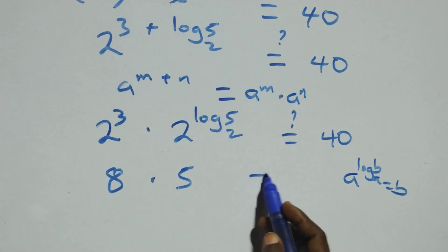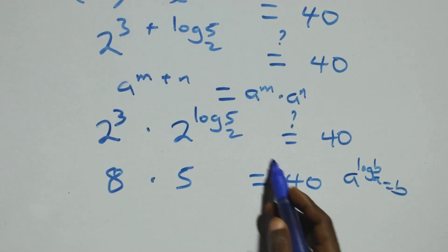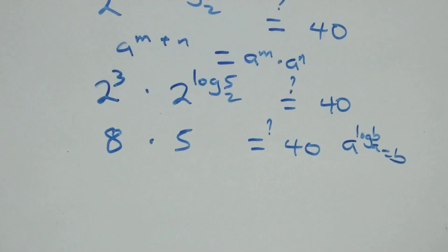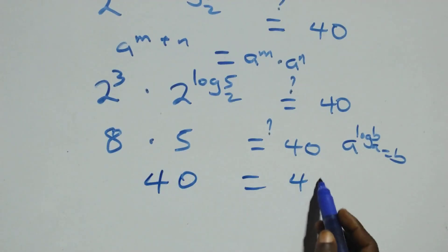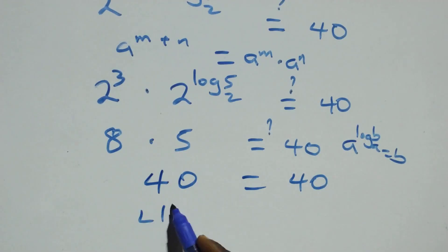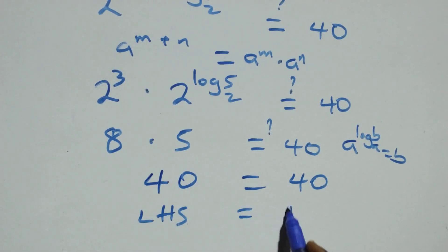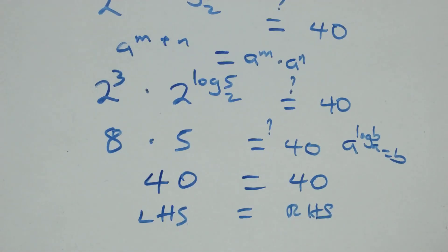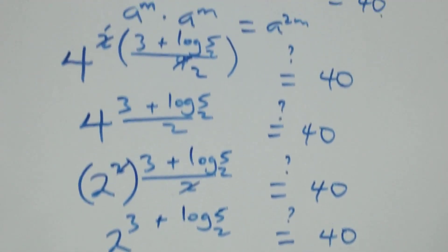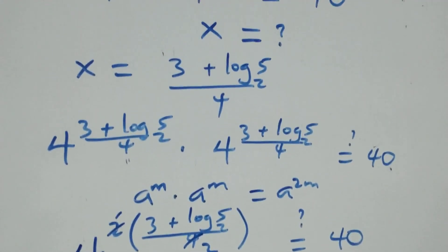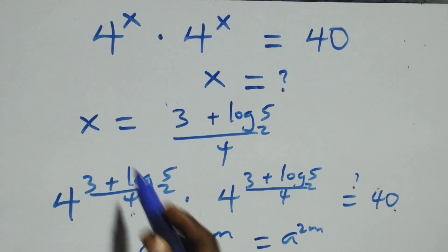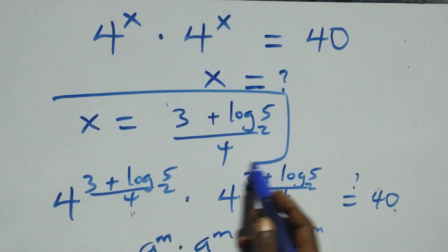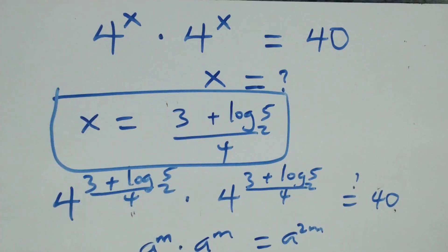Applying the logarithm identity a raised to power log base a of b equals b, we get 8 times 5 equals 40, which equals 40 on the right-hand side. The left-hand side is equal to the right-hand side. Therefore, we conclude that x equals (3 plus log base 2 of 5) over 4 satisfies this given problem.